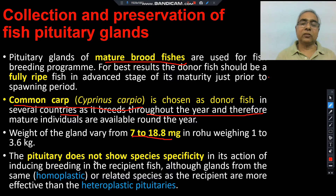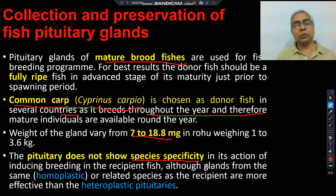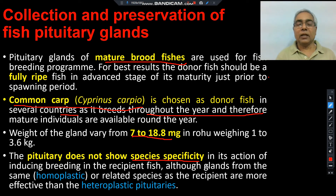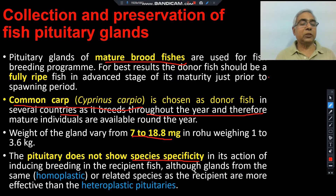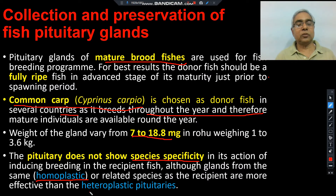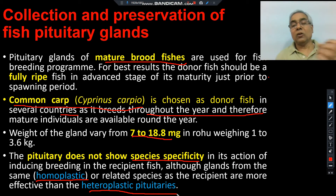The pituitary gland does not show strict species specificity — meaning we can inject pituitary extract from one species into another species and it will work. However, if we use the gland of the same species, that condition is termed homoplastic, and the success chances are better compared to using heteroplastic pituitaries, where pituitary glands are collected from a different species.